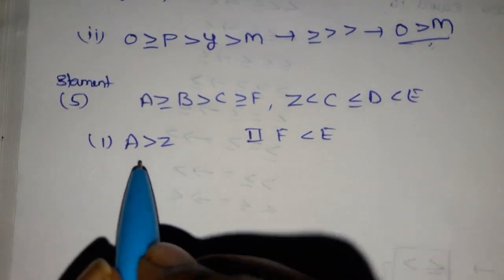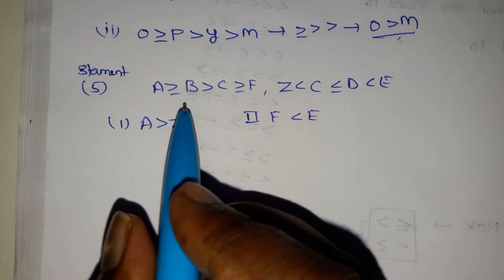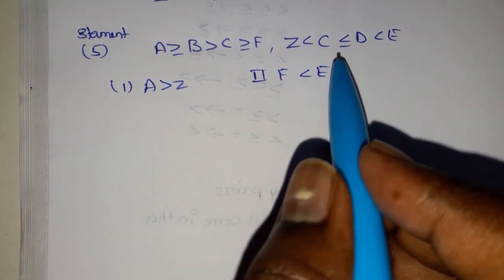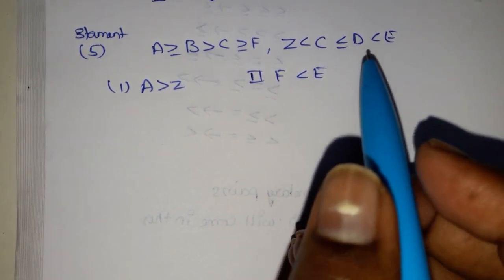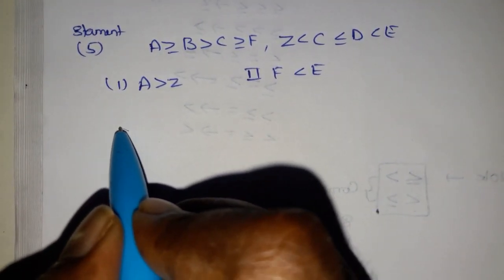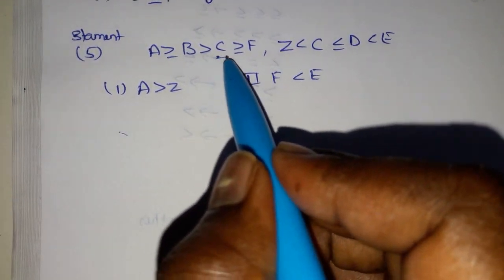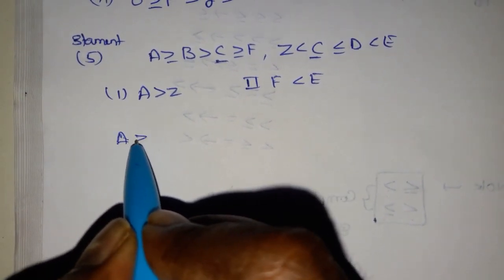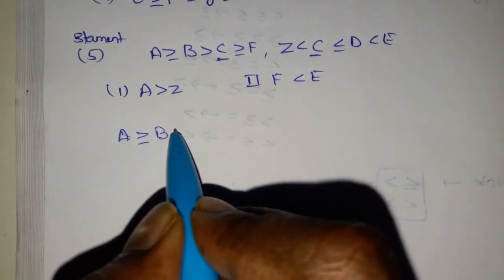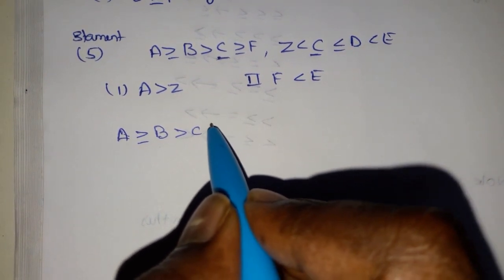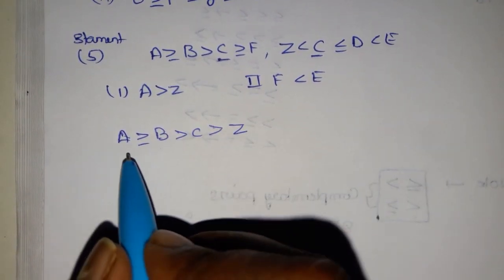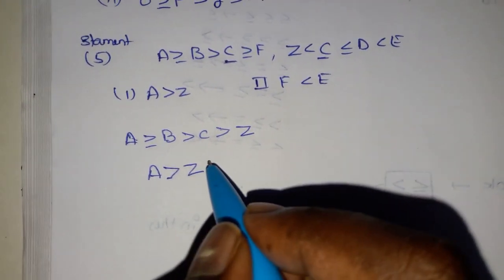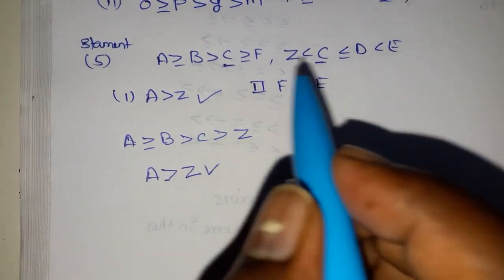Last problem: A greater than or equal to B, greater than or equal to F; Z less than C, C less than or equal to D less than. First conclusion: A to Z — the common element is C. A greater than or equal to B, B greater than C, C greater than Z. So the final conclusion is A greater than Z. This is correct.